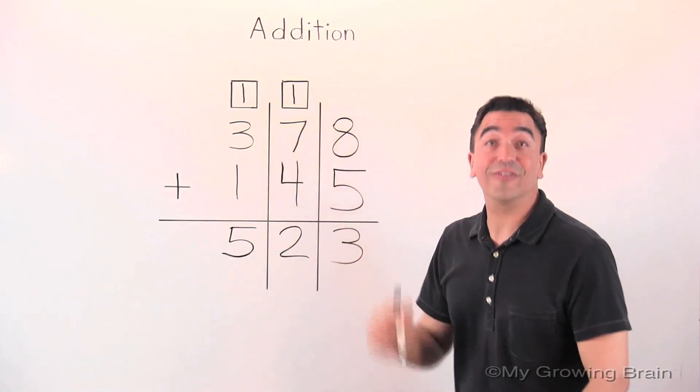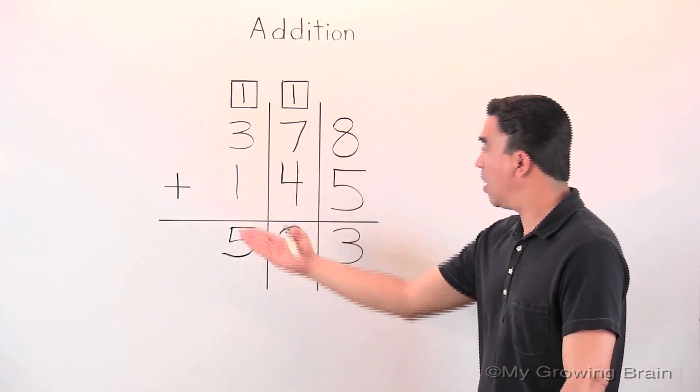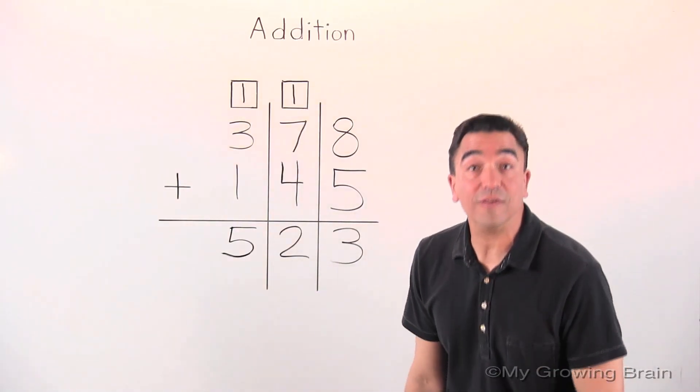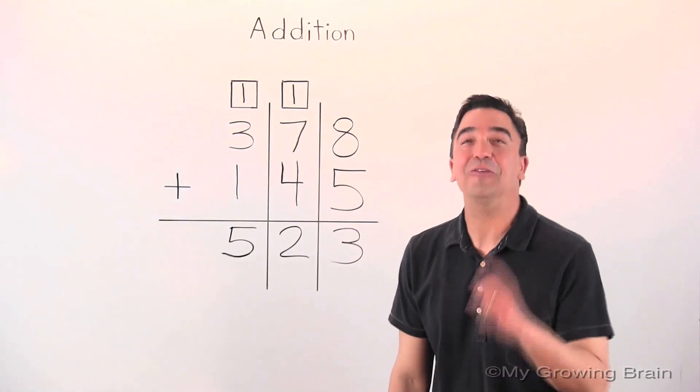Three hundred seventy-eight plus one hundred forty-five gives us a sum of five hundred twenty-three.